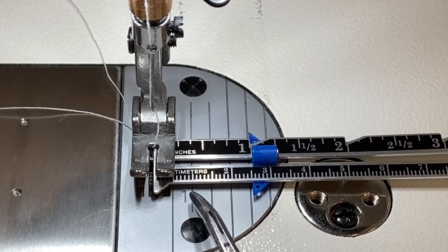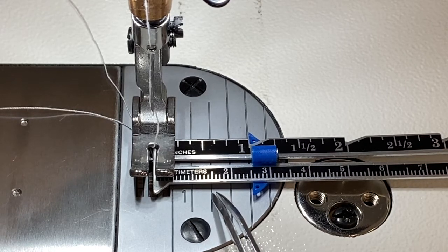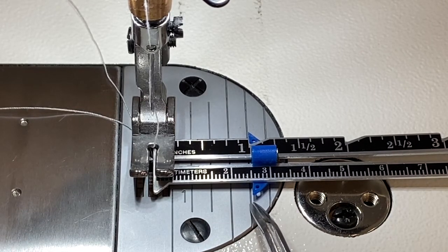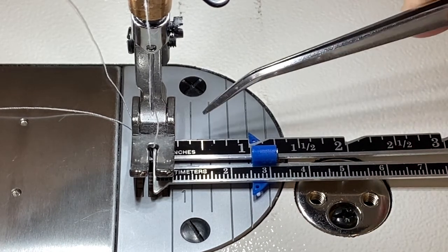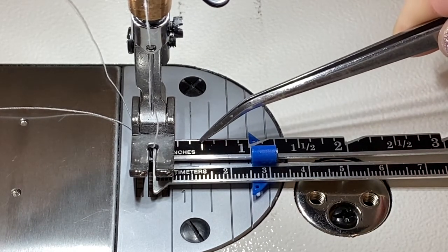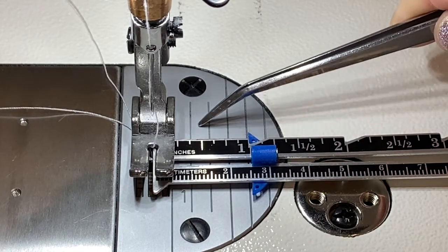On both of these machines, the stitch width guides on the throat plate are in metric units, spaced half a centimeter apart between each marking. If you're aiming to sew at half an inch seam allowance, line up your raw edges halfway between the 1 centimeter and 1.5 centimeter markings.